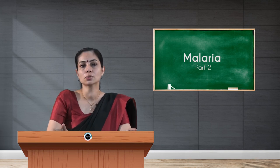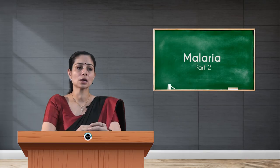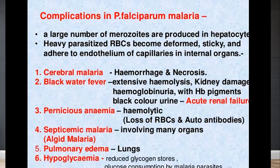Infection with Plasmodium falciparum leads to malignant malaria. A large number of merozoites are produced in hepatocytes. Heavily parasitized RBCs become deformed, sticky, and adhere to endothelial capillaries of internal organs. This leads to cerebral malaria with hemorrhage and necrosis, blackwater fever with extensive hemolysis, kidney damage, hemoglobinuria with black-colored urine, pernicious anemia due to loss of RBCs and presence of autoantibodies, septicemic malaria involving many organs, pulmonary edema in the lungs, and hypoglycemia due to glucose consumption by the malarial parasite.